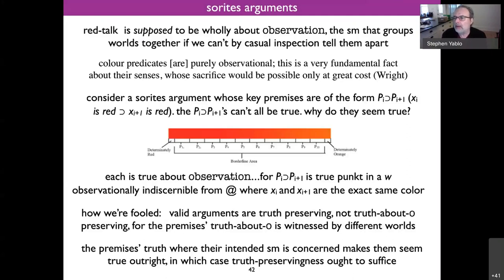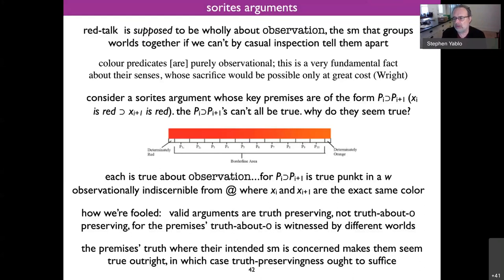You might think this doesn't gain us anything, because each premise is true about observation but the conclusion — run as a reductio — is the absurd, or the last item in the series is red and not red. That conclusion is not true about observation: there's no world observationally equivalent to ours where something is red and not red. So you've got a valid argument from premises that are true about observation to a conclusion that's false about observation. That's bad.